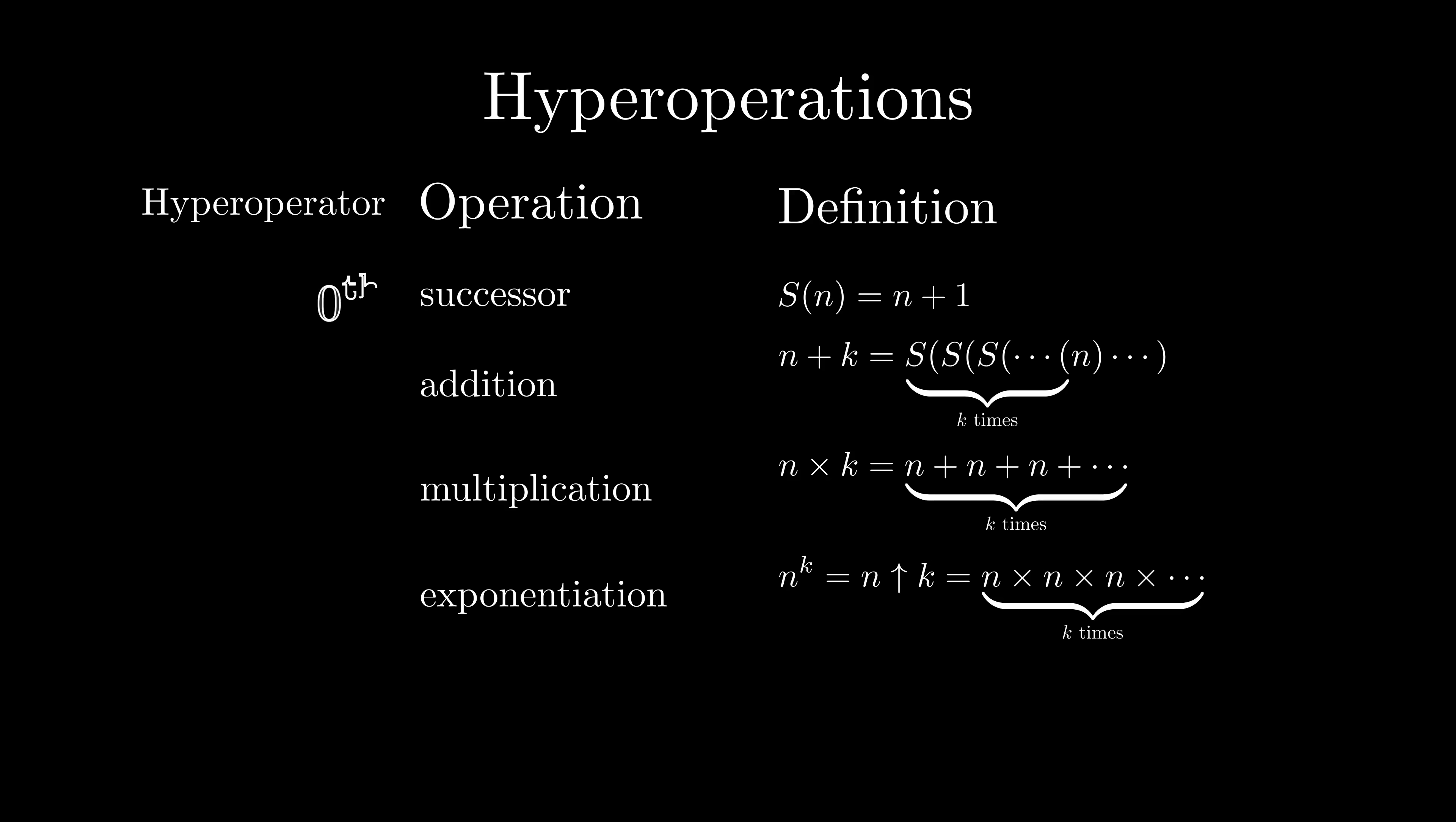This hierarchy of operations is called hyperoperations. Succession is considered the zeroth hyperoperator, addition is the first hyperoperator, multiplication is the second hyperoperator, and so on. You could continue this hierarchy if you wanted to. The fourth hyperoperator is called tetration, which you may have heard of before. The higher the hyperoperation, the earlier it must appear in the order of operations.